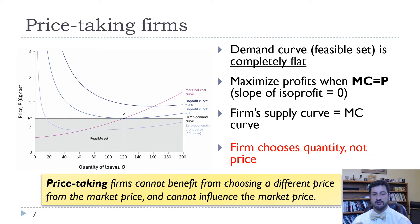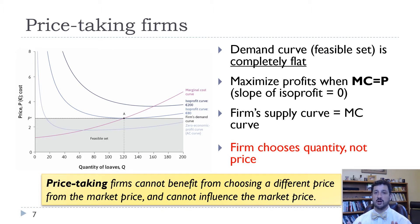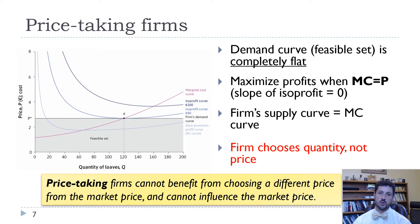But each firm in perfect competition, when they are price takers, has no control over the price, which means that they face a completely flat demand curve. They can sell as much as they want at the market price, but they can't sell at a higher price. Which means they have no choice over the price — that's why we call them price taking firms. So they can only choose the quantity.